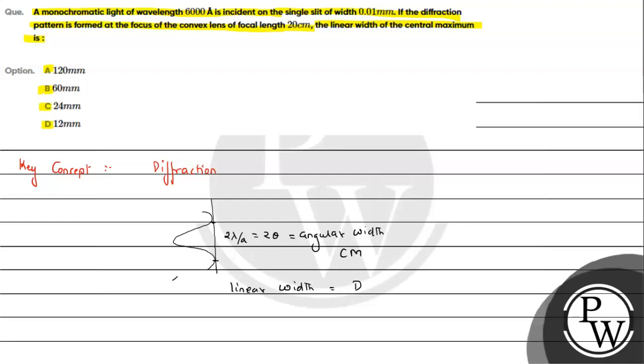Capital D is the distance of the screen from the slit, which is our single slit where waves are incident, and we keep a convex lens so that all the rays can be focused on the screen.